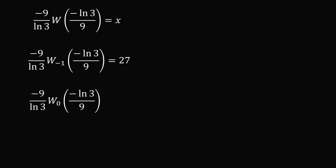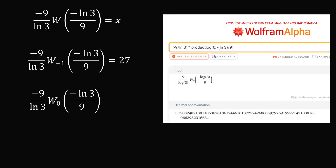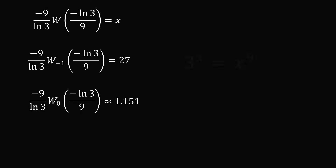For the other branch, the only way to proceed is numerically. Inputting the principal branch expression into Wolfram Alpha gives the decimal approximation x approximately equal to 1.151. So in summary, 3 to the power of x equal to x to the power of 9 has two real solutions: x equal to 27, and x equal to negative 9 over ln 3 times W₀ of negative ln 3 over 9, which is approximately equal to 1.151.